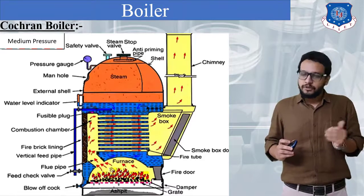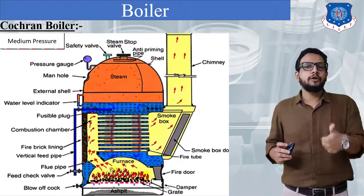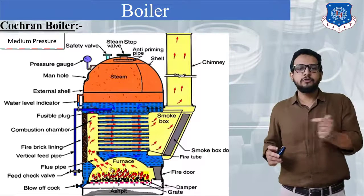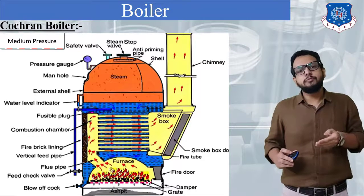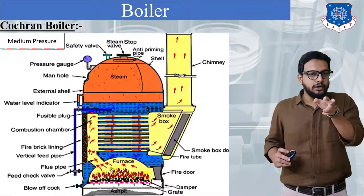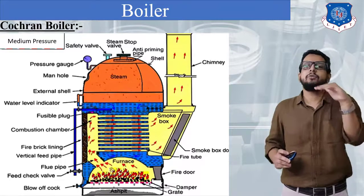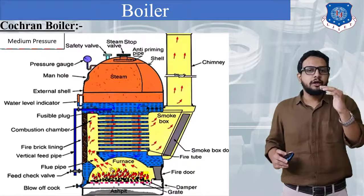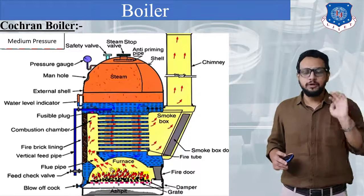Now let's start with the working of this boiler. Working is very simple. First of all we are going to open a feed check valve to fill water into the boiler up to a safe water level, which will be shown by a water level indicator. After seeing that indicator we are going to stop the supply of water if it is under the safe water limit.